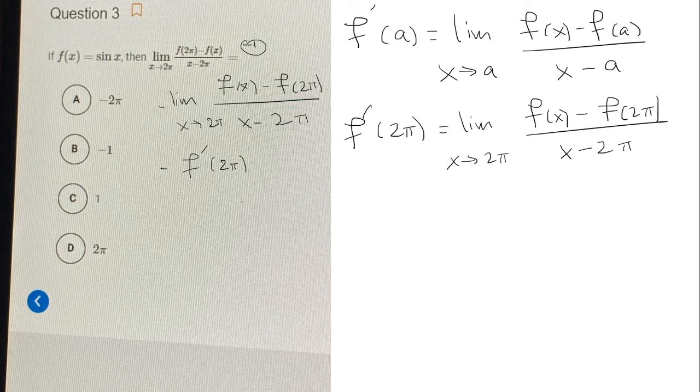Now f of x is sine of x, so f prime of x is just cosine of x. We're going to plug in 2 pi and then multiply it by negative. So that would just be negative cosine 2 pi. And that is just negative 1. So our answer is b.